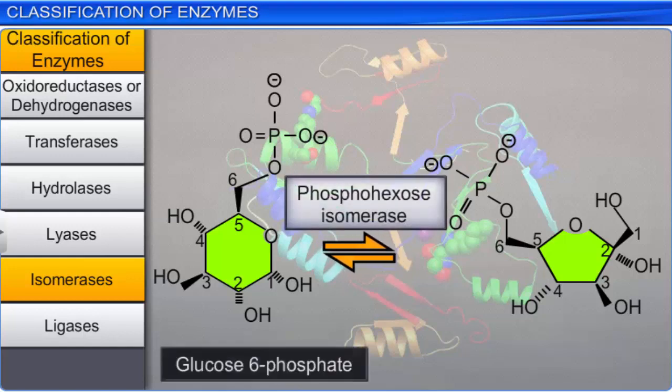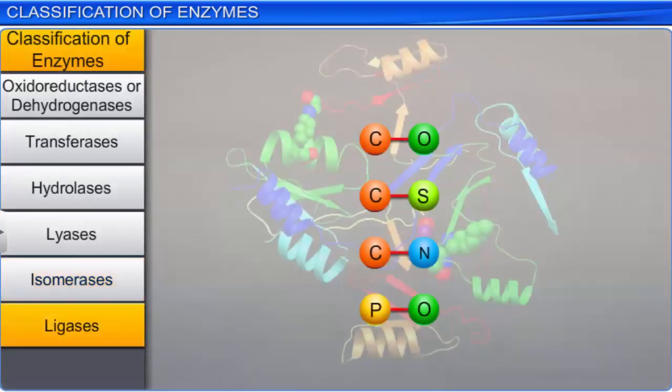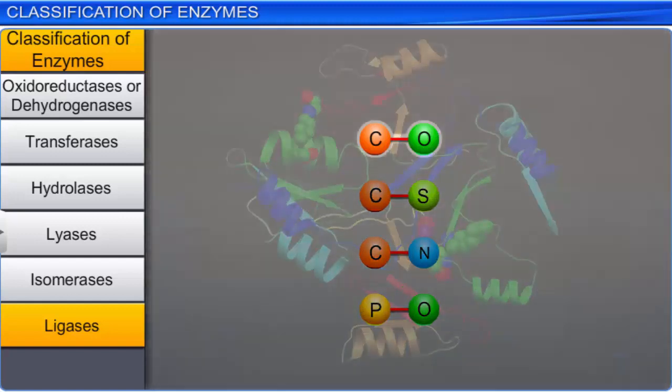Ligases form the sixth class of enzymes. They catalyze the linking together of two compounds. For example, the joining of carbon with oxygen, carbon with sulfur, carbon with nitrogen, and phosphate with oxygen bonds is catalyzed by ligases.